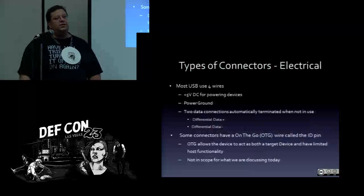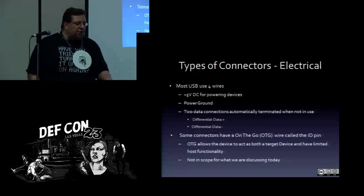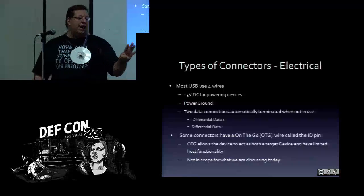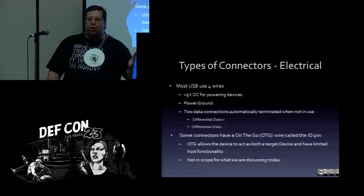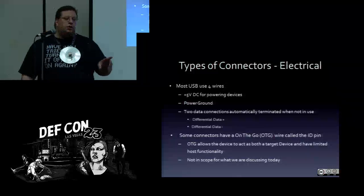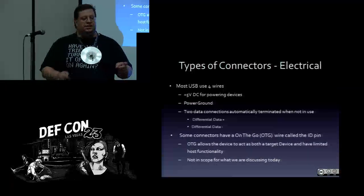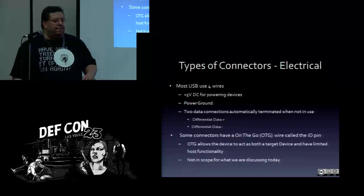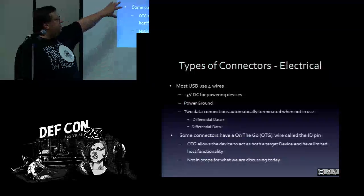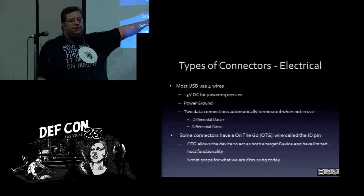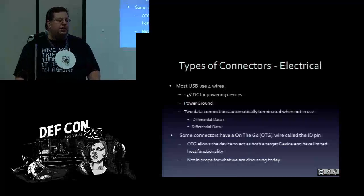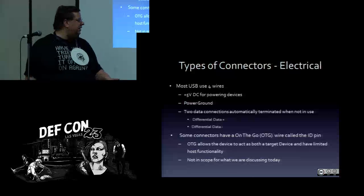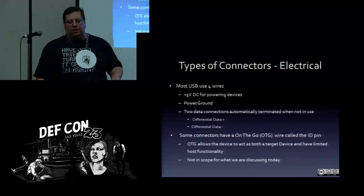USB is a four-wire protocol. There are four wires inside that cord: ground and power at five volts, and two data wires. It's differential data — a positive and a negative that you just have to interpret. Some connectors have a fifth pin, the OTG, which lets you use your phone as a USB battery, but that's not really important when it comes to fuzzing. The key thing to remember is that with the exception of USB 3, everything is just different form factors of those same four wires.